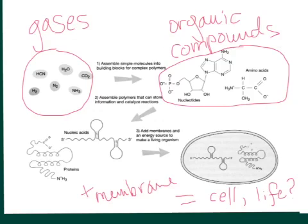In this model, you would have gases such as cyanide, water vapor, carbon dioxide, ammonia, and others. These gases would then form into polymers, and these polymers would be organic compounds — which basically means they contain carbon.